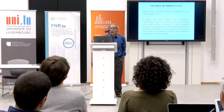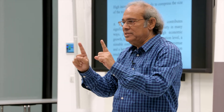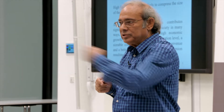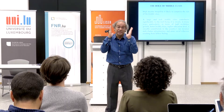High income inequality is likely to compress the size of the middle class. The middle class is defined around the median income. If you have an odd number of observations, the middle-most income is the median income — for example, with three observations 1, 2, 4, the median is 2. If there is an even number of observations, you take the average of the middle two observations.